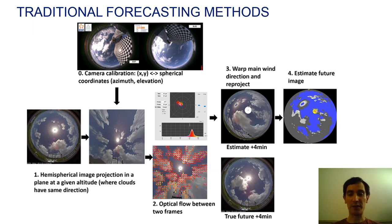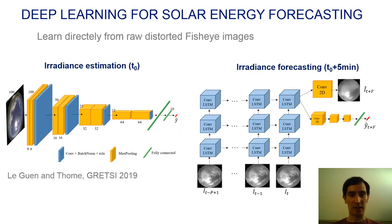Then, we compute the optical flow between two images to get the cloud motion. And finally, we compute the future image by warping this motion into the future. The future irradiance is obtained with the segmentation method on the image and standard machine learning techniques.